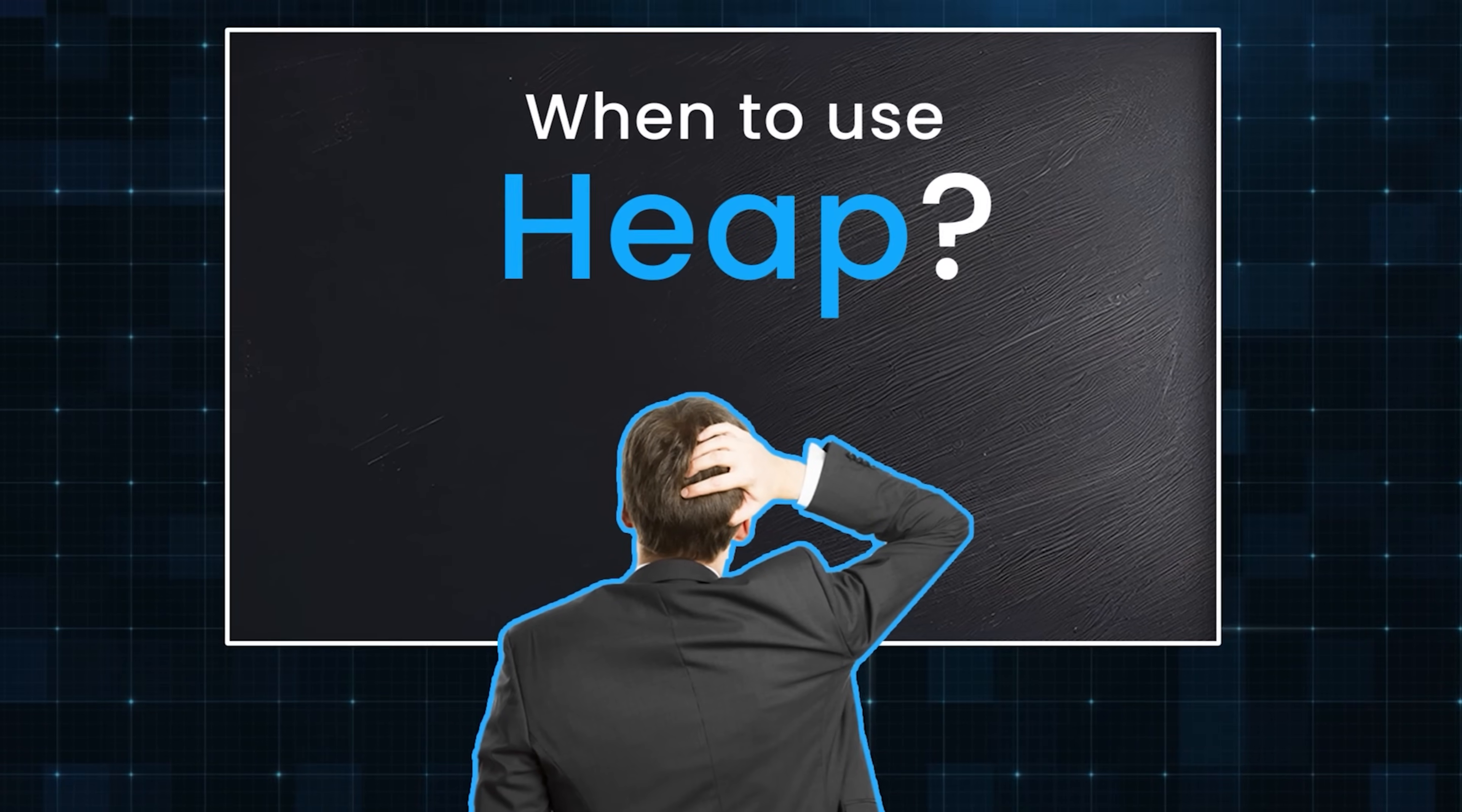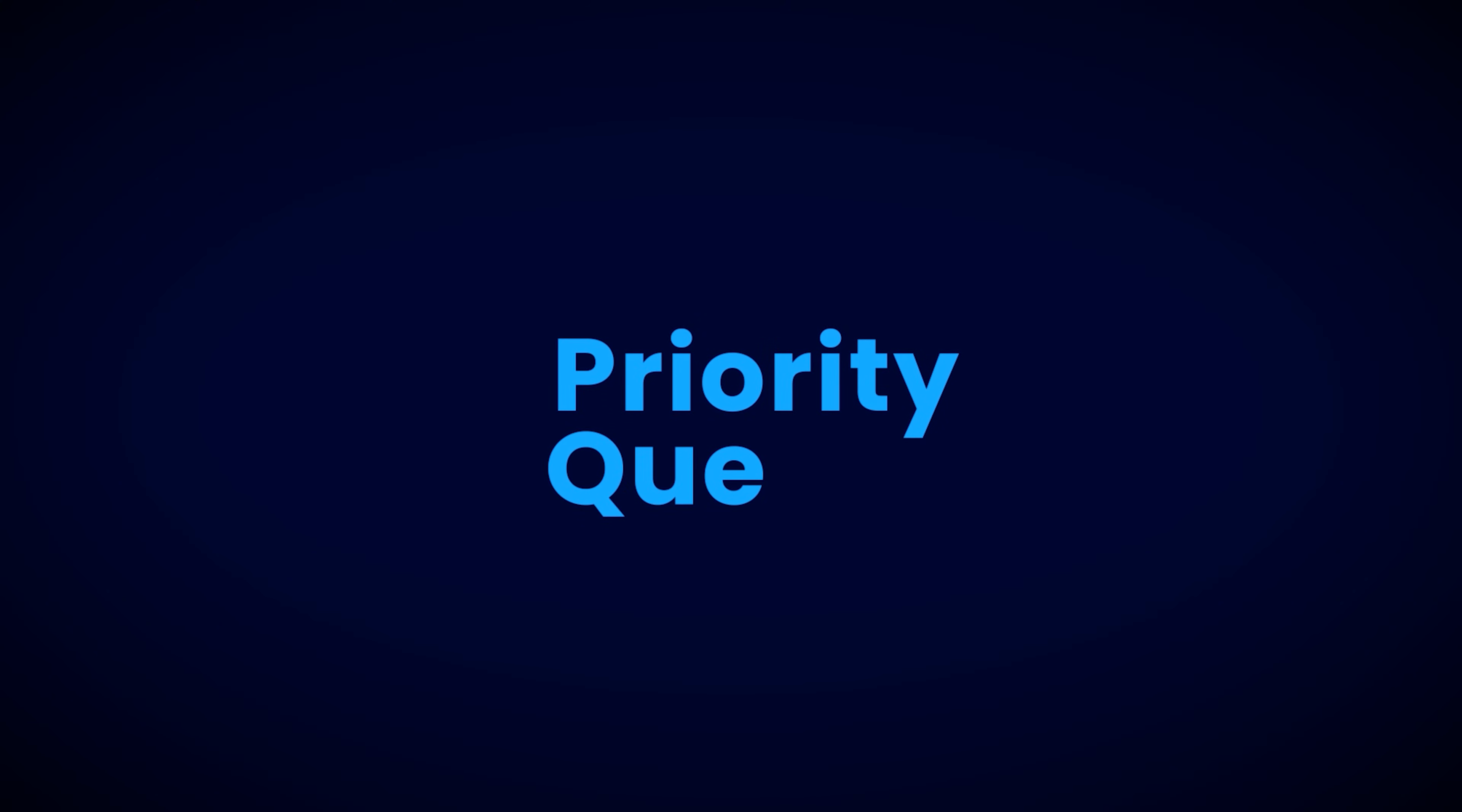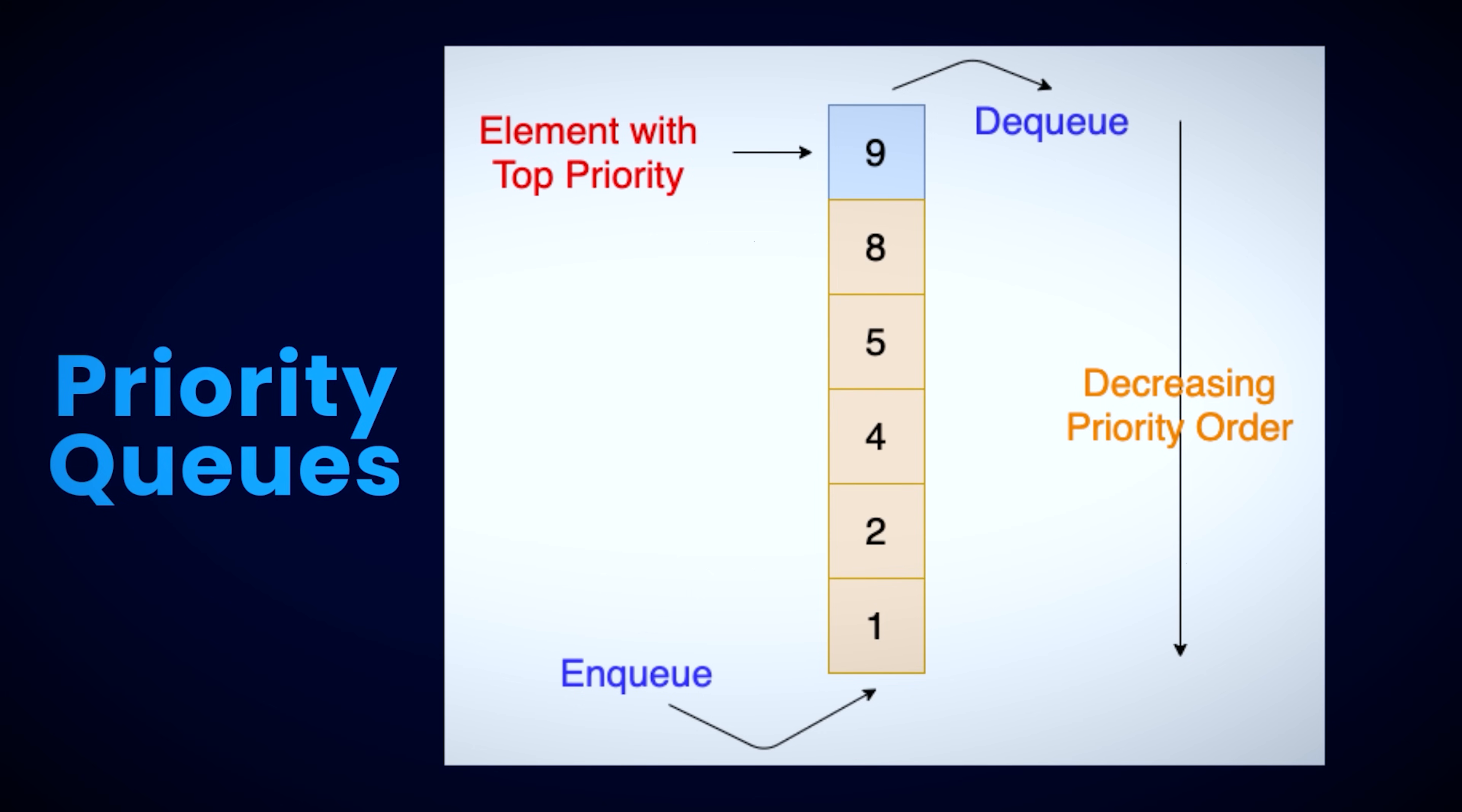So when do you use a heap? The most important property of a heap is that it makes getting the maximum or the minimum of all the numbers very easy. So whenever you need quick access to max or min, think about heap. For example, we can use heap to implement priority queues. A priority queue is a data structure where each element has a priority or a score associated with it. And when you remove an element from this data structure, you get the element with highest priority or score first.